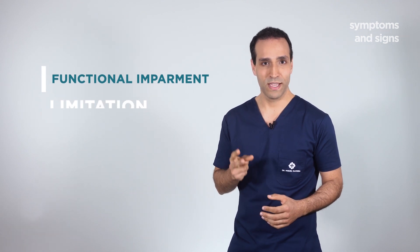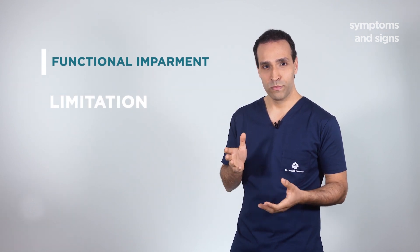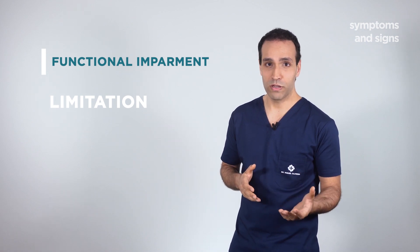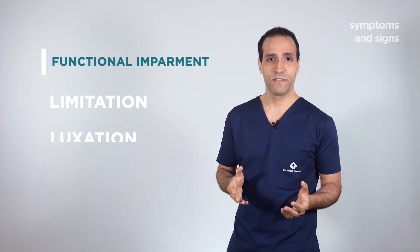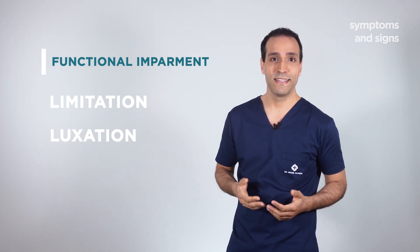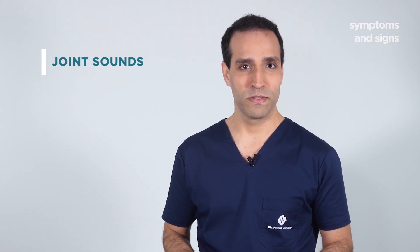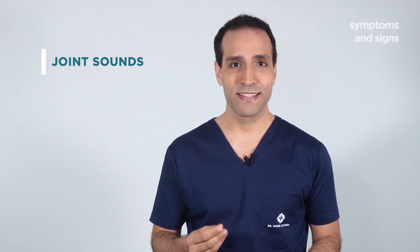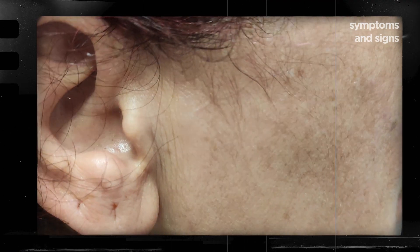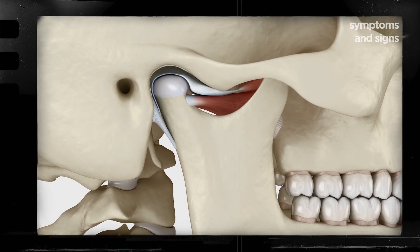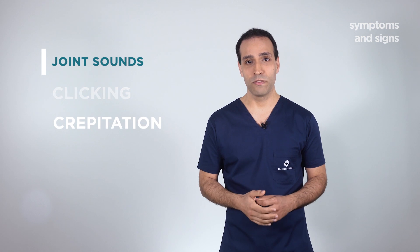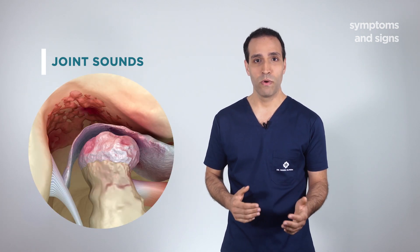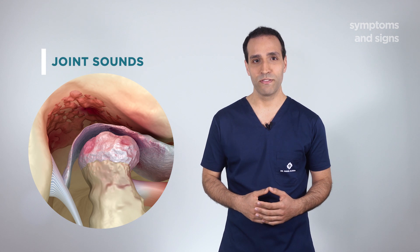There can be changes in the range and direction of jaw movement, which must be divided into two categories: limitation of jaw movement because of a mechanical blockage stopping the movement, or just as a self-restriction to avoid pain. Alternatively, there can also be joint luxation when there is an excessive movement. Another common complaint is the annoyance caused by joint sounds. The most common noise is the clicking sound, caused by non-synchronous movements of the disc and the condyle, or a crepitation sound when the bone surfaces of the mandible and the temporal bone rub onto each other in cases of degenerative joint disease.